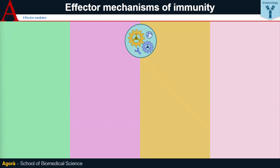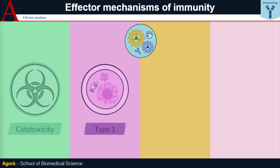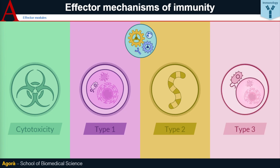In general, there are four effector modules: cytotoxicity, which leads to the elimination of cells infected with viruses or those under cellular stress; Type 1 or intracellular immunity, which promotes the removal of intracellular pathogens; Type 2 or mucosal and barrier immunity, which leads to the removal of parasites; and Type 3, or immunity against extracellular bacteria and fungi.